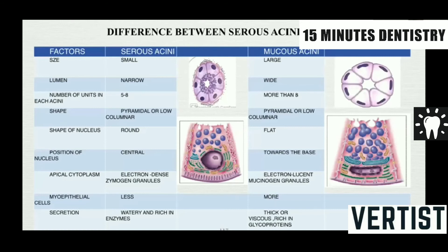Key differences between serous and mucous acini: Serous acini are smaller with a narrow lumen, pyramidal cells, and a round centrally positioned nucleus. They have electron-dense zymogen granules and fewer myoepithelial cells, and their secretion is watery and rich in enzymes. Mucous acini are larger with a wider lumen, a flat nucleus positioned toward the base, electron-lucent mucigen granules, and more myoepithelial cells. They secrete a thick viscous fluid rich in glycoproteins.